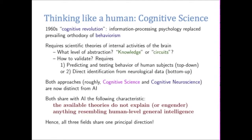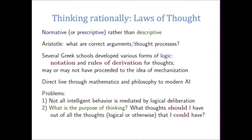Both cognitive science and cognitive neuroscience share with AI the following challenge: the available theories do not explain or lead to anything resembling human-level general intelligence. Thus all fields share one principal direction, which is to try to develop something like a general theory that can predict or model human intelligence.